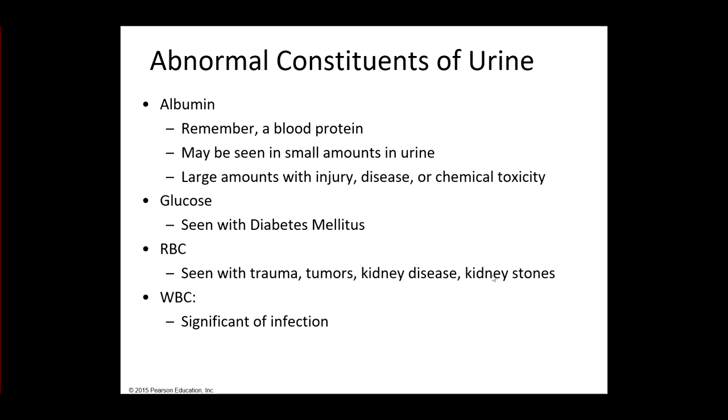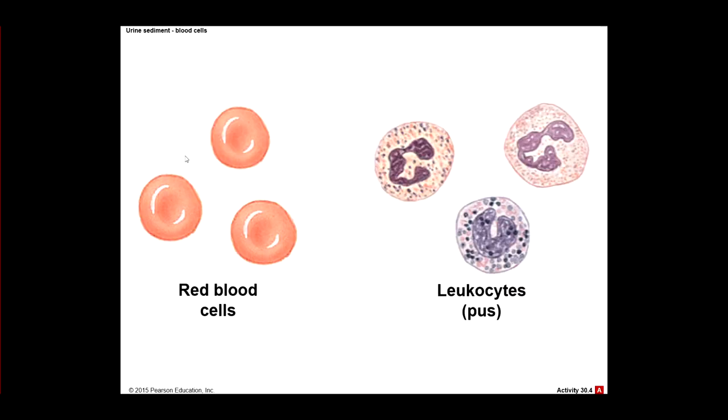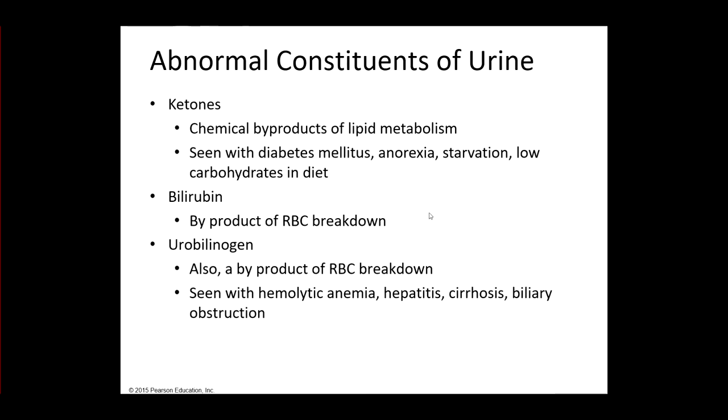Red blood cells we don't want to see. That indicates trauma, tumors, kidney disease. And again, as we said before, maybe even kidney stones. White blood cells we don't want to see in urine either. That's going to tell us we have infection. So this would be red blood cells. And then if you remember, different white blood cells.